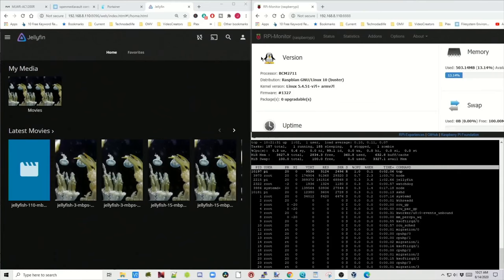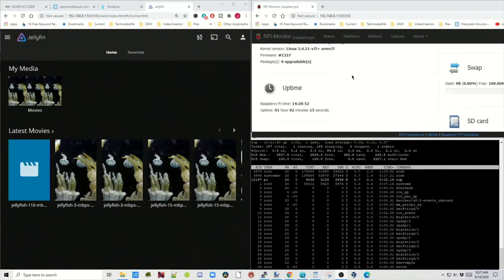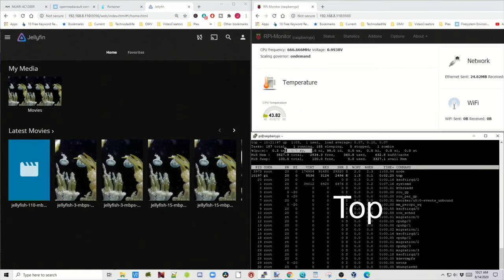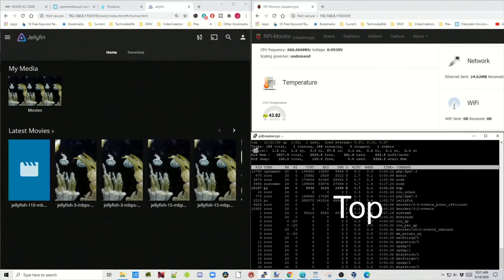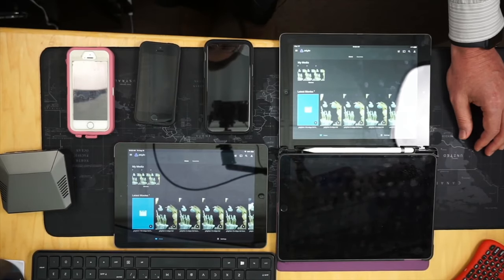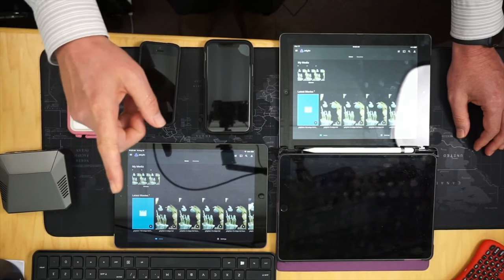So let's take a look at what we have here. We have Jellyfin over here on your right or left hand side. I have Raspberry Pi monitor here because we're going to be using that to monitor our temperature. Down below we have top running, which is going to tell us the percentage of the CPU that's being used. We have three iPads, three phones, and we're also going to be using our computer. Let's start everything up and see how many movies we can stream without transcoding.